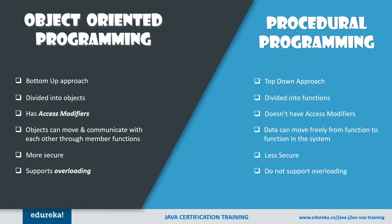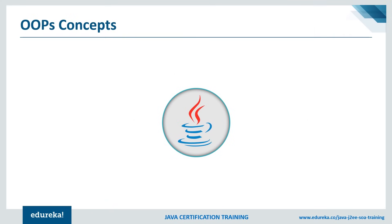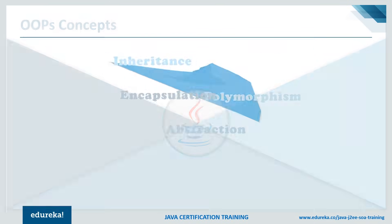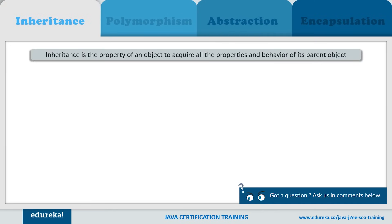There are four major fundamentals when it comes to object-oriented programming structure: encapsulation, abstraction, polymorphism, and inheritance. These are the four major building blocks of any object-oriented programming language — we also call them the pillars of OOP. We'll discuss them one by one. To begin with, what is inheritance?